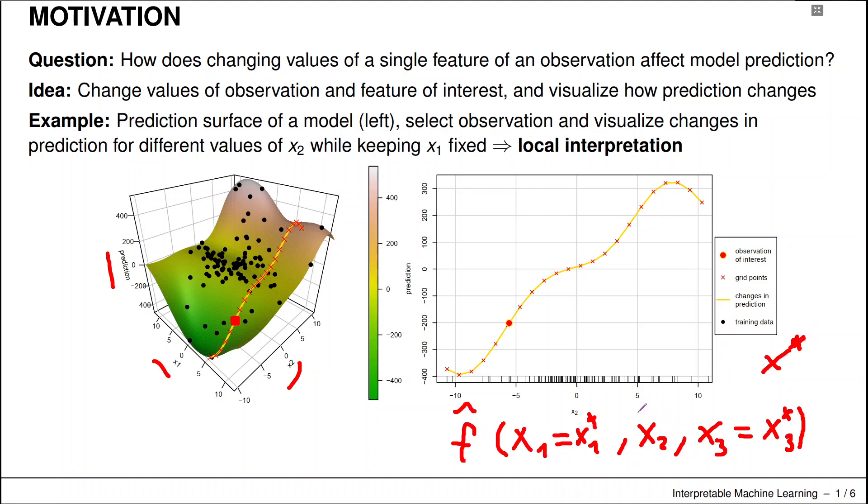We just make that variable, plug in different values, and we plot the resulting slice function that we obtain when we plot x₂ at various hypothetical grid values.